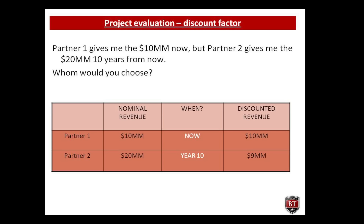Now imagine it turns out that partner one gives me the 10 million now, but partner two gives me the 20 million 10 years from now. I know that I can invest the money at 8%. As a financial analyst, before making any choice, I calculate the discounted revenue for partner two: 20 divided by 1.08 to the power of 10 equals 9 million. Now I can compare them — at this point I am in love with partner one. The net present value difference is $1 million.